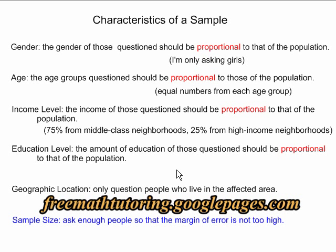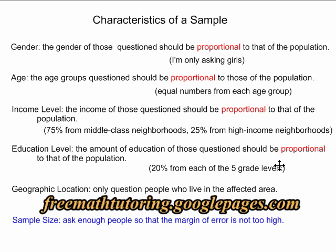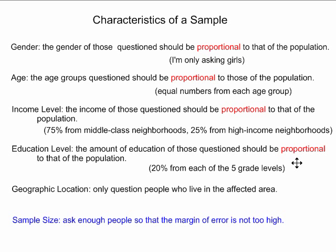Education level usually means you want to make sure that the amount of college graduates and high school graduates you question in a survey are proportional to that of the population. But in this case, we can modify that. The population is a high school. So let's say there are five grade levels in the high school. We will make sure to ask 20% of the people in our survey from each of the five grade levels so that all are represented.